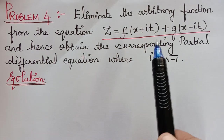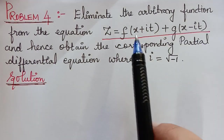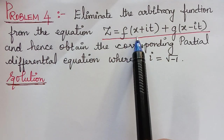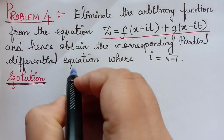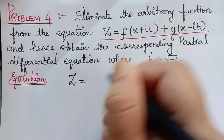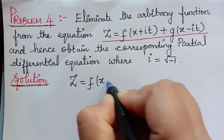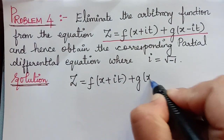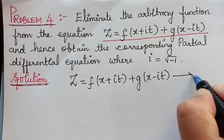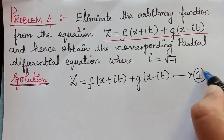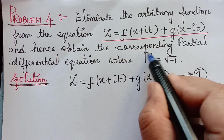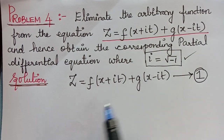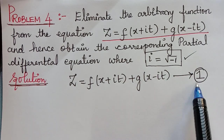Let us see how to solve this problem now. As the first step, we have to differentiate the given equation partially with respect to x. We will mark the given equation as equation 1: z = f(x + it) + g(x - it), where the value of i is given to be the square root of negative 1, that is, it is an imaginary number.